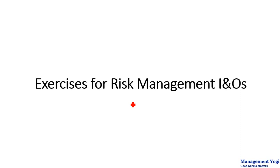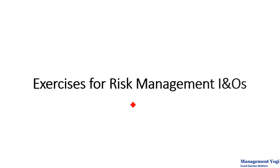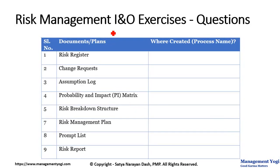This exercise covers inputs and outputs for risk management. We have a table where one column lists documents or plans, and you have to identify in which process each document or plan is created. If it is not created in risk management, you write 'not applicable.' We are referring only to risk management processes. Sometimes it may not be a document — it might be a tool and technique, in which case you note that it is used as a tool and technique.